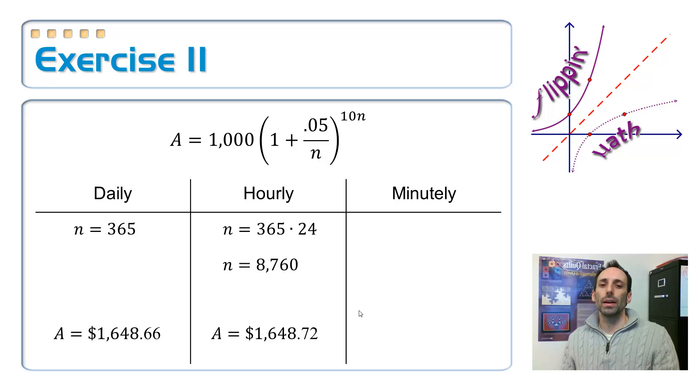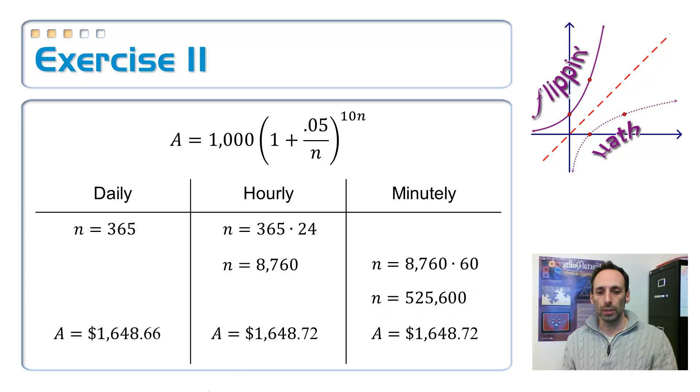Okay. Let's look at by the minute. Minutely. So in each one of those 8,760 hours, there's 60 minutes. So you multiply those things out, and we're compounding it 525,600 times. Now this one's got to be over $2,000, right? I mean, look how many times we're compounding it, and we get the exact same number. It didn't go up a single penny. We've done it over 500,000 more times, and it didn't go up a cent. Why is that? That's weird.